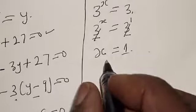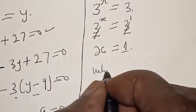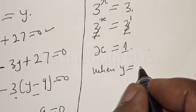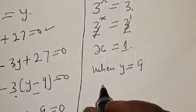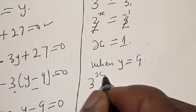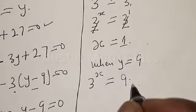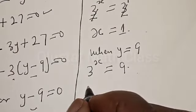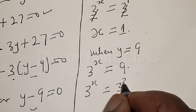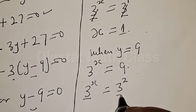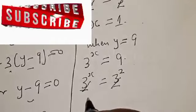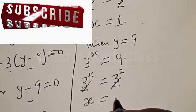Also, when y is equal to 9, we have 3 raised to the power x equal to 9, which is 3 raised to the power 2. They have the same base, so the bases cancel. Therefore x is equal to 2.